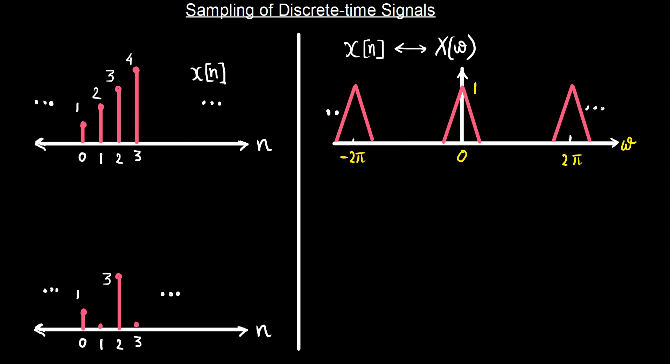We take a simple arbitrary signal, say 1, 2, 3, 4, and assume its Fourier transform looks something like this. Now, in many applications of discrete time signal processing we require the sampling of discrete time signals itself. If we want to obtain a signal that is a sampled version of the original signal x(n), we might want to retain every alternate sample and discard the remaining ones, obtaining a signal where alternate samples are kept.